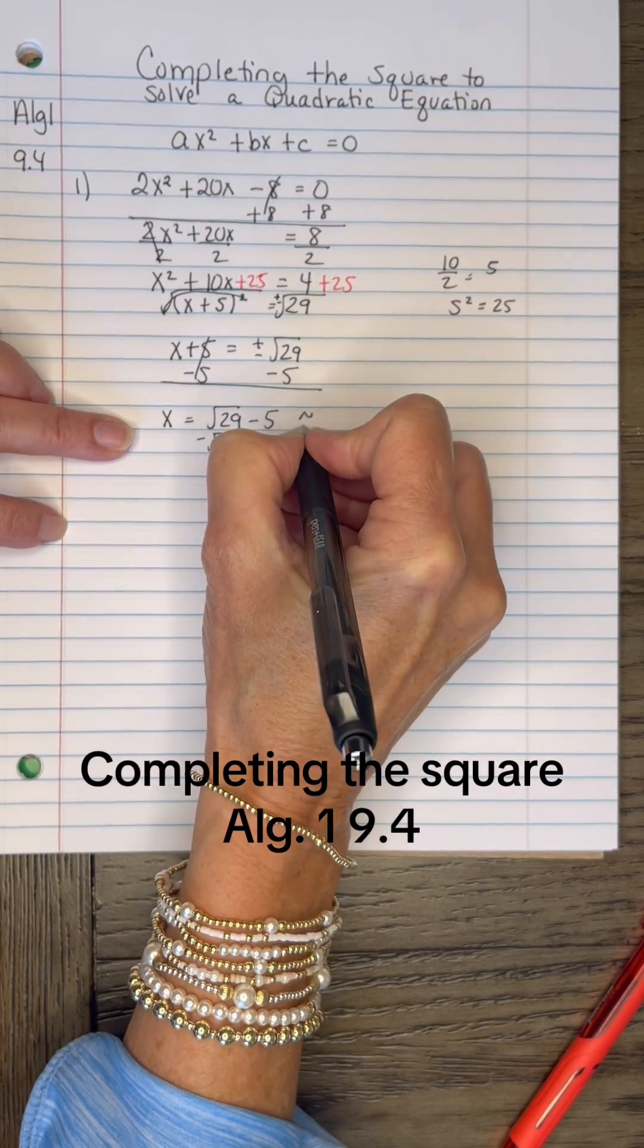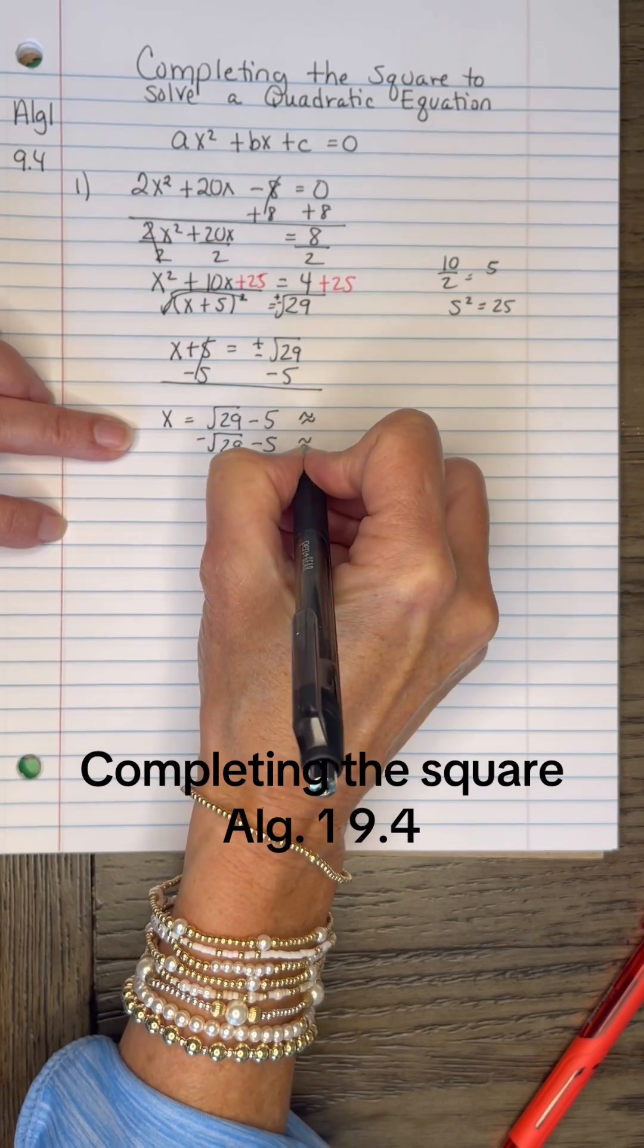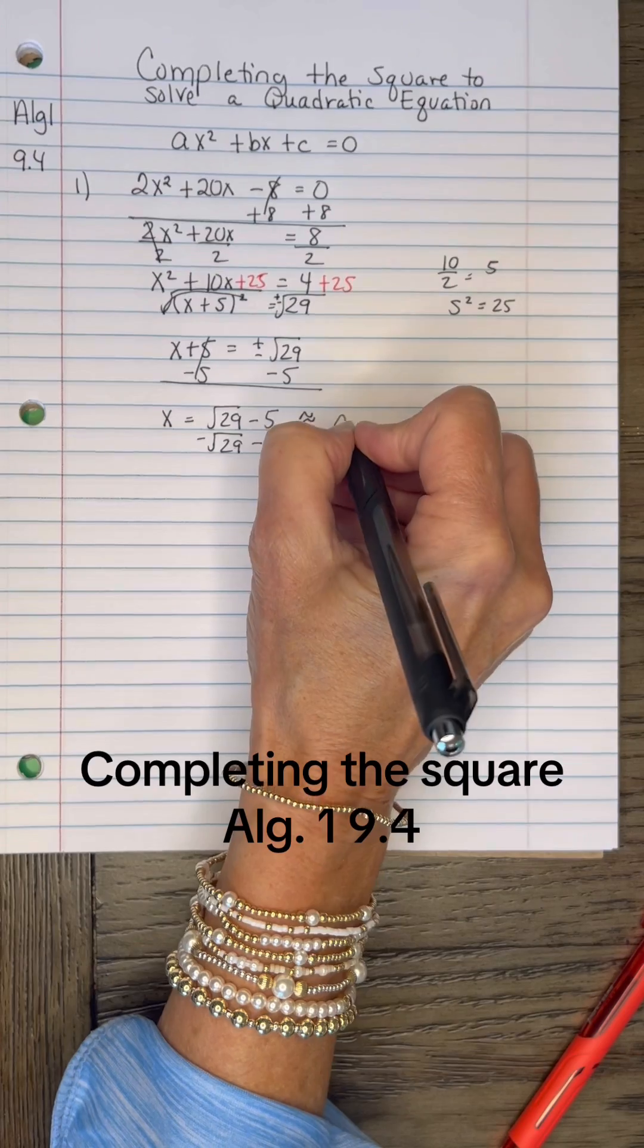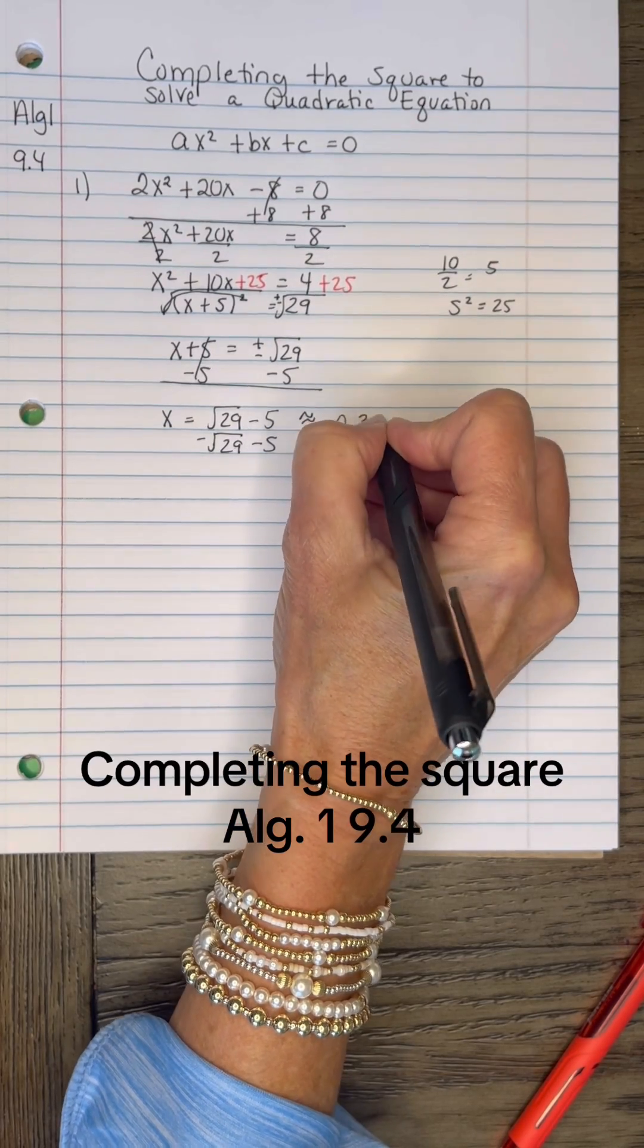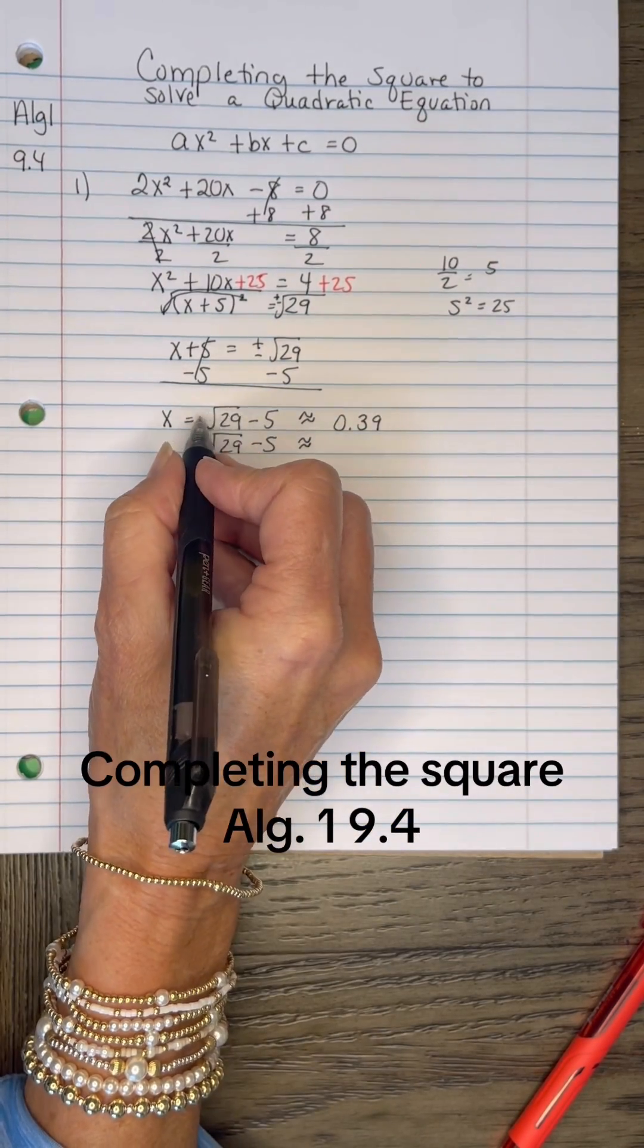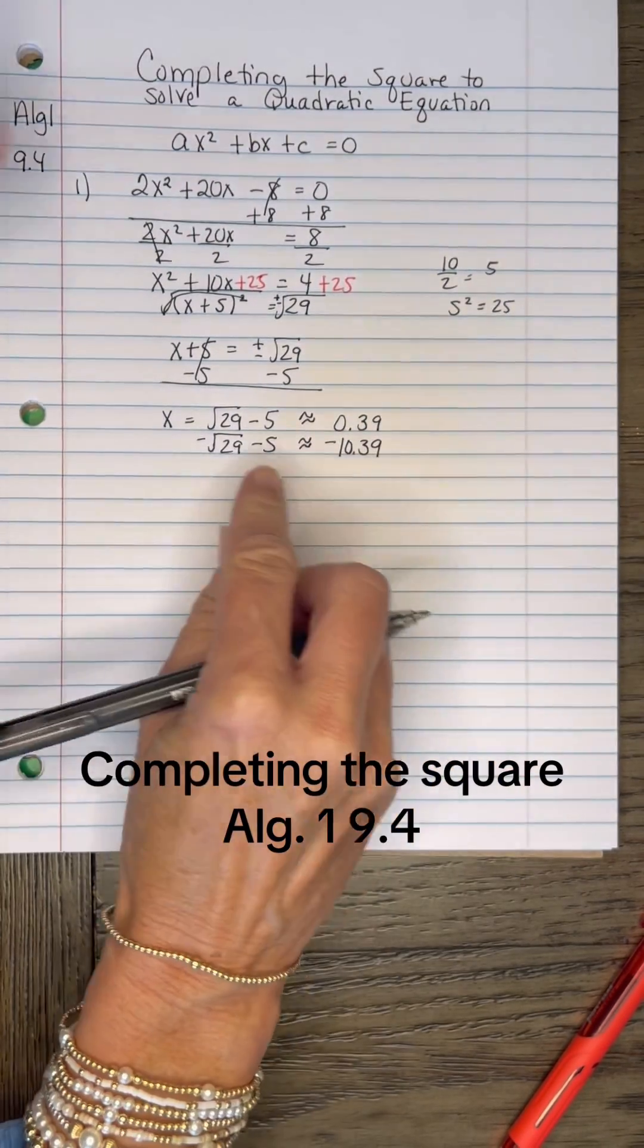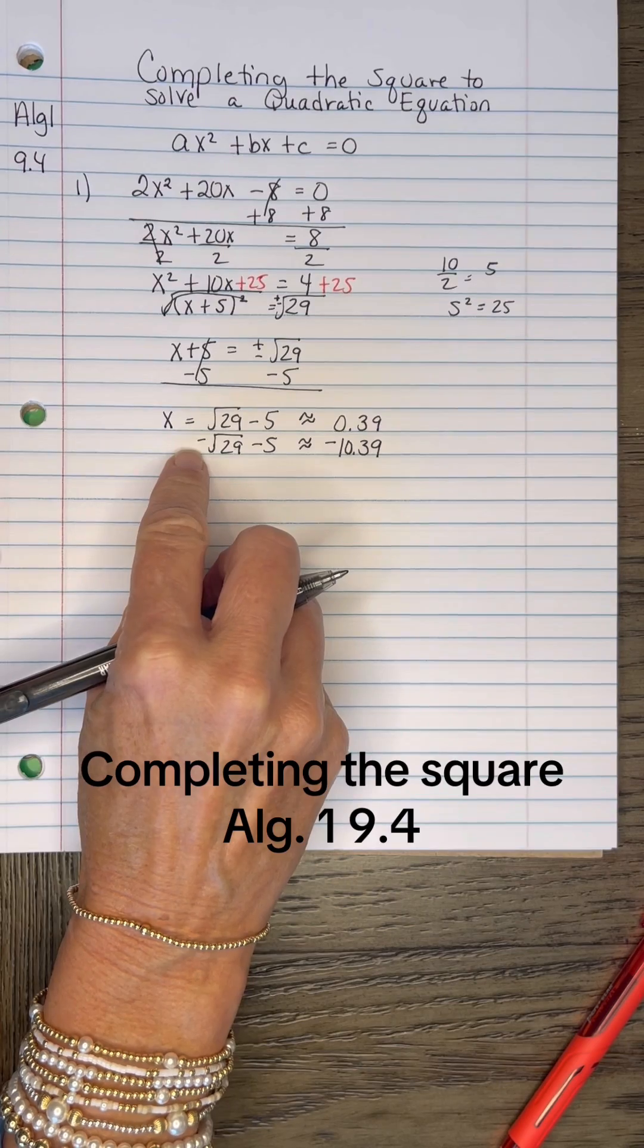If I'd have had my graphing calculator with me, I could show you that, but I'll just have to tell you, put it in the calculator. You should get approximately 0.39 when the square root of 29 is positive, and you will get negative 10.39 when the square root of 29 happens to be negative.